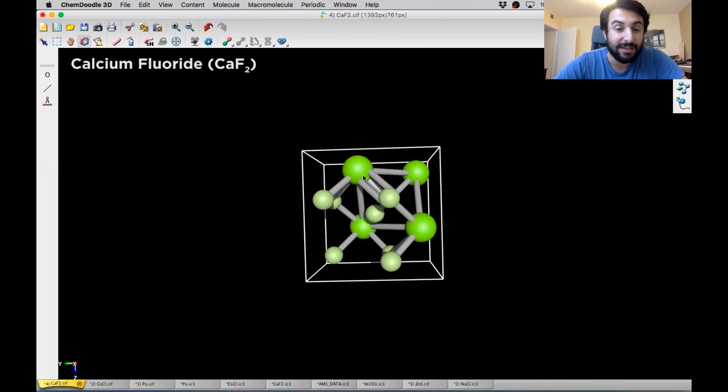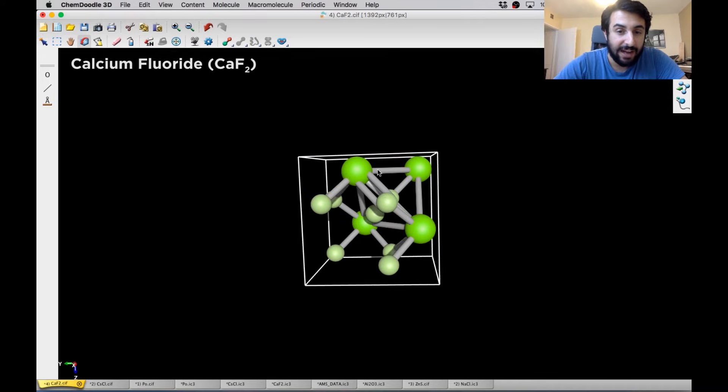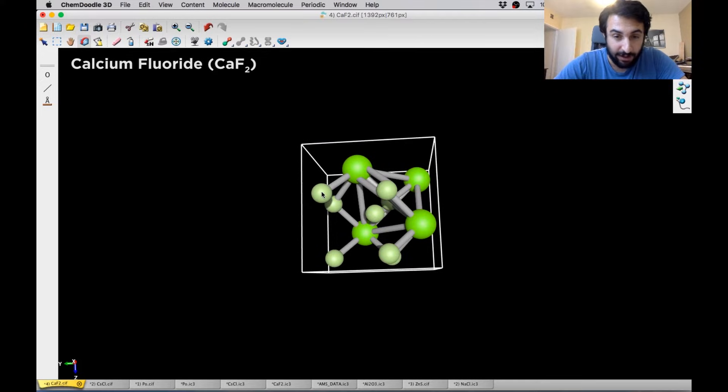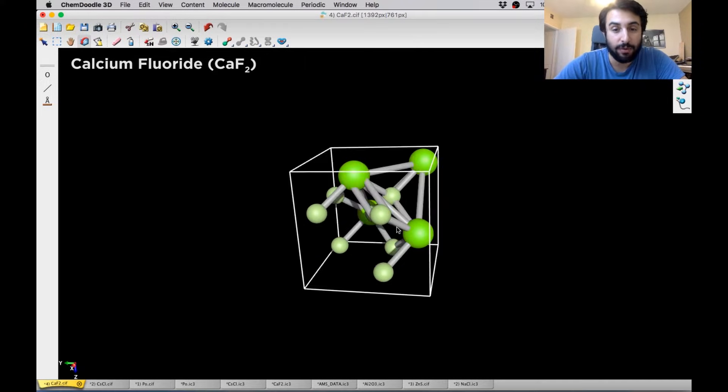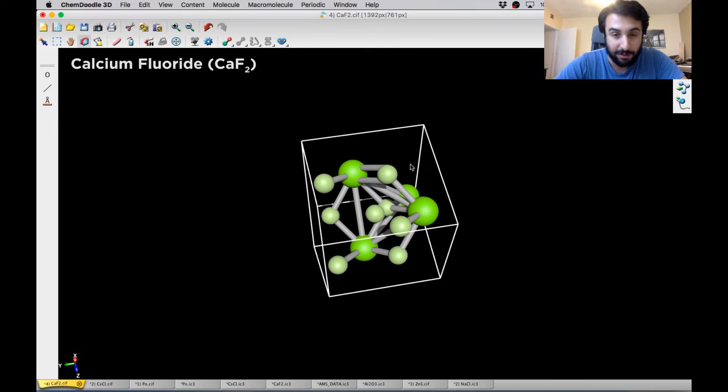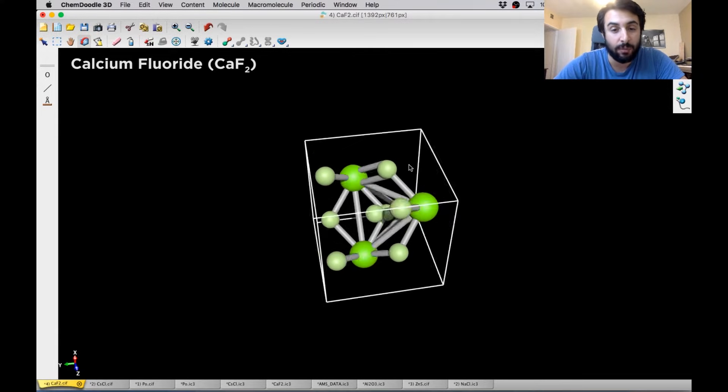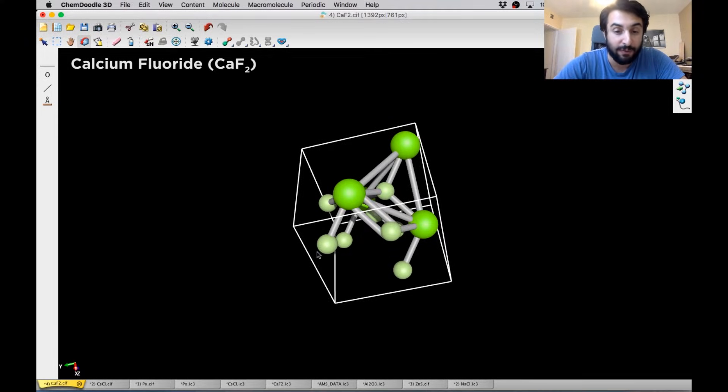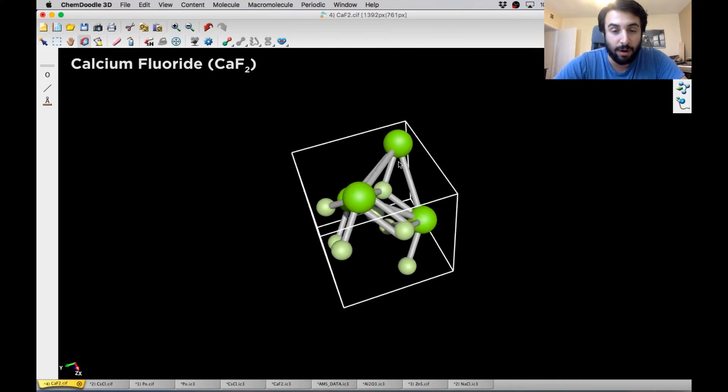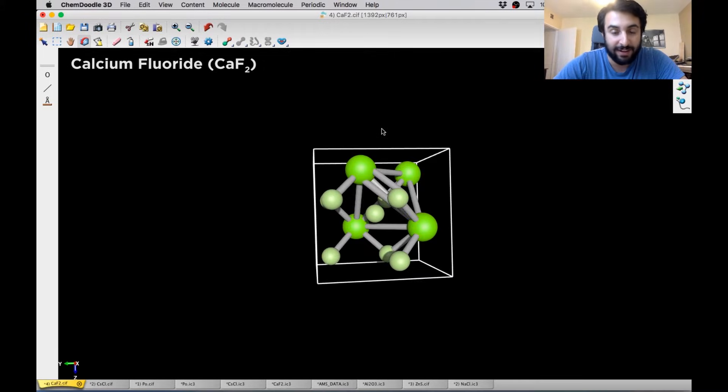So now we're looking at calcium fluoride. So we've got Ca2 plus ions in green. And then the F minus fluoride ions over here. These are the smaller ones. And so now we're looking at something where we've got a 1 to 2 ratio. Earlier we were looking at 1 to 1 ratios of cation to anion. Now we have 1 calcium ion for every 2 fluoride ions. So we can see the discrepancy in the number there. And now we're also looking at a difference in the size of the ions.